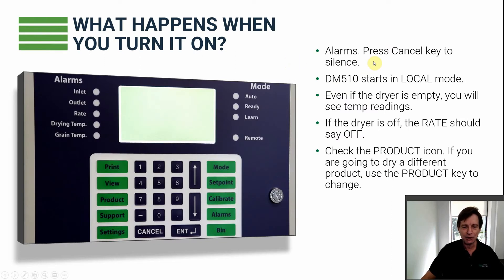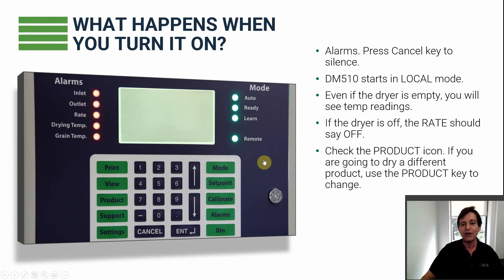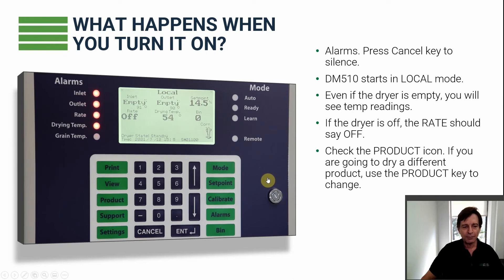Everything's wired up and commissioned — we're ready to go for the first time. You turn on the power at the bottom, the screen lights up, and it takes about a minute to load the software. The lights will go through a sequence of testing. We're going to get some alarms because the dryer is not running at the moment. We cancel those, and now we've started up: the dryer is not running, both sensors read empty, the dryer rate reads off, and the drying temperature will take a little time to get up to ambient.